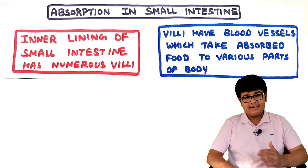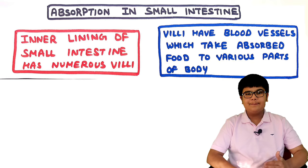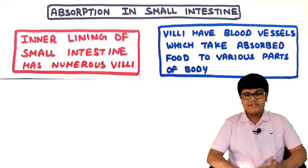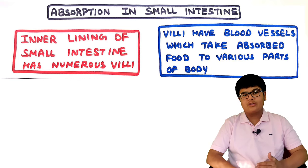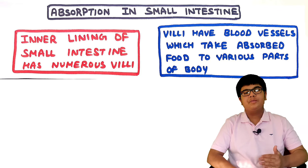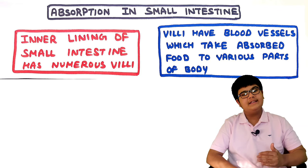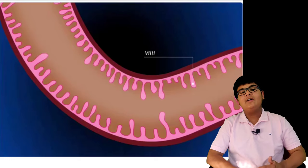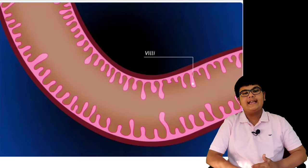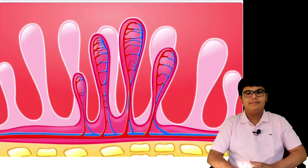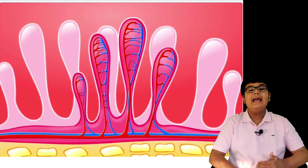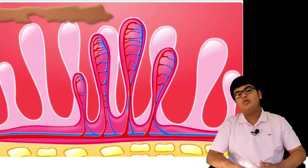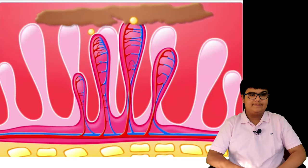After digestion is completed in the small intestine, absorption is carried out. The inner lining of the small intestine has numerous villi with blood vessels that take the absorbed food to various parts of the body.